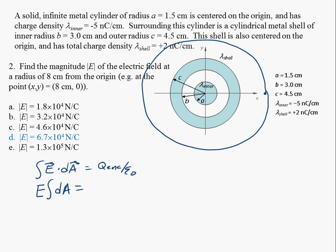And the amount of charge that I'm going to enclose, well, I'm enclosing both the charge on the inner cylinder as well as on the shell. So I'm going to have to include both lambda inner plus lambda shell. And then that's a charge density, charge per unit length. So I need to figure out how long my cylinder is, and that's going into the page. I'll just call that L, again divided by epsilon naught.